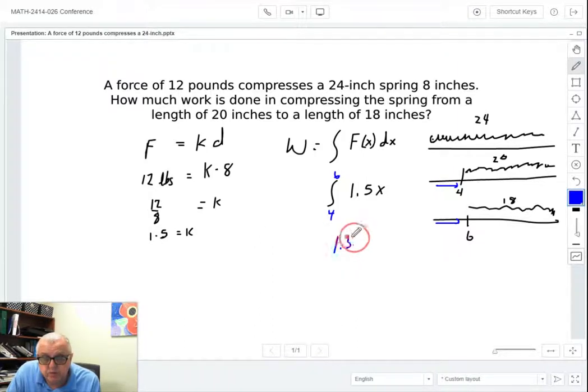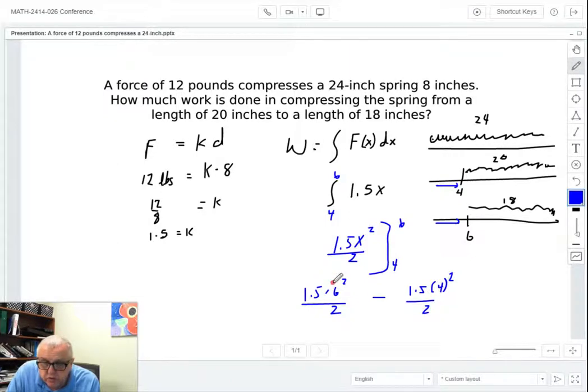So that's all we do. 1.5 x squared integrated divided by 2. And we're going to integrate from 4 to 6. 1.5 times 6 squared over 2 minus 1.5 times 4 squared over 2. And when I integrate that from 4 to 6, I get 15. So the answer to this problem is 15 inch pounds.